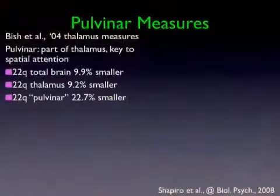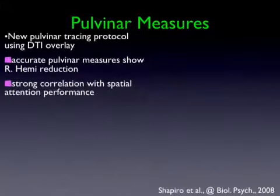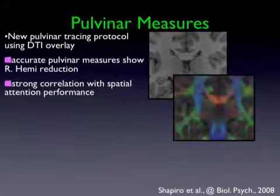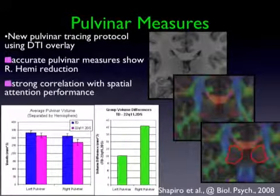The pulvinar in the back of the thalamus is a very important root of the attentional system and very difficult to measure because the boundary is hard to see. We use diffusion tensor imaging to find that boundary very clearly and then measure it accurately. Heather Shapiro, a graduate student, found that this area — the same one that showed up in spatial neglect research — is considerably smaller in kids with a deletion, not everybody but as a group, and more so on the right than the left. The right side of the brain does tend to deal with spatial information. This correlates with performance on those spatial attention tasks.